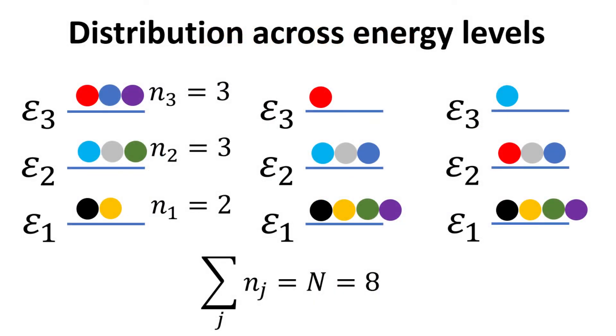Let's consider a 3 energy level system with a total of n equals to 8 particles. First, we can distribute different number of particles to each level, denoted by n sub j, which in the system on the left, we have n1 equals to 2, n2 equals to 3 and n3 equals to 3.